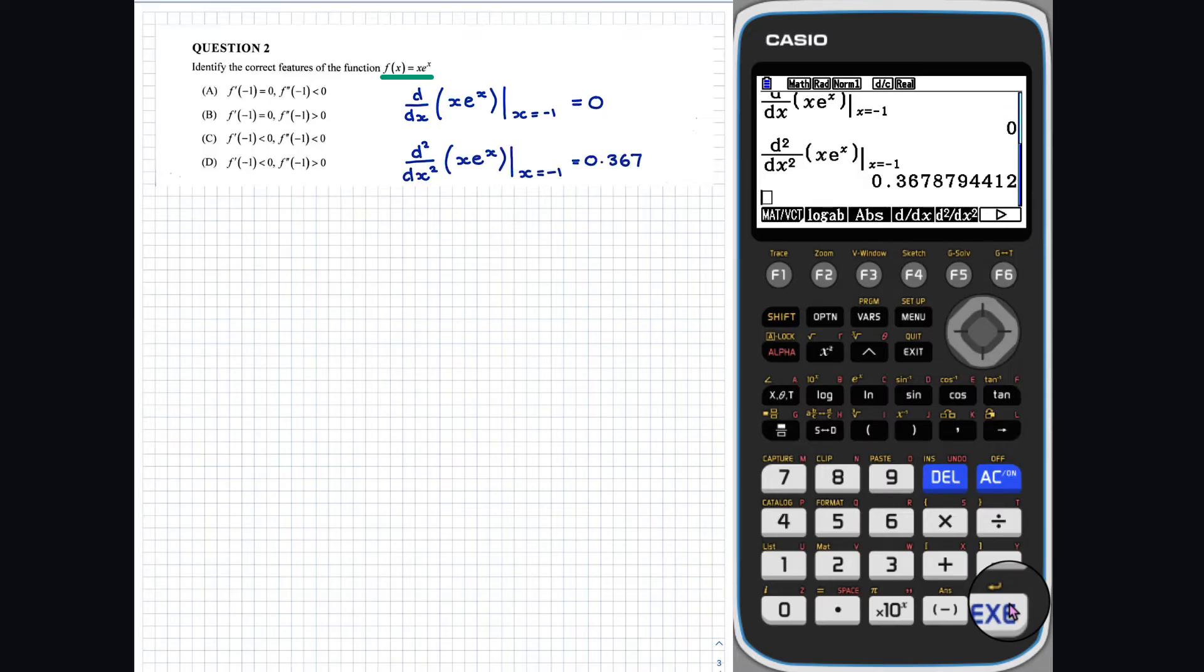We use f5 to get the second derivative. So, we have that f dash of x equals 0 and f double dash of x is positive. So, the correct answer is b.